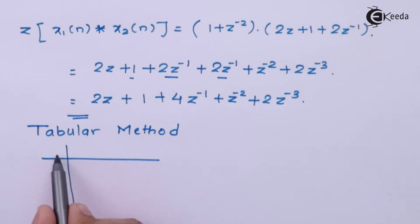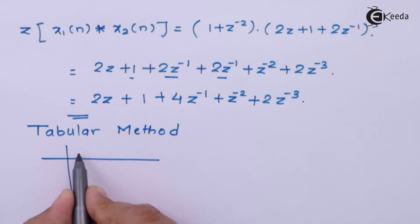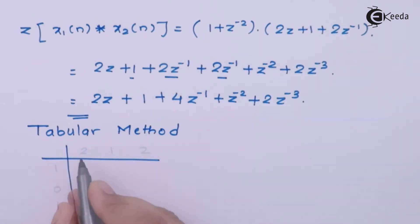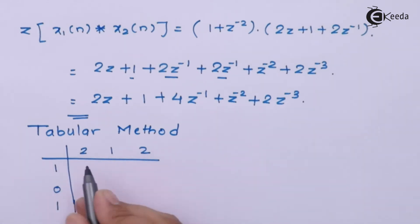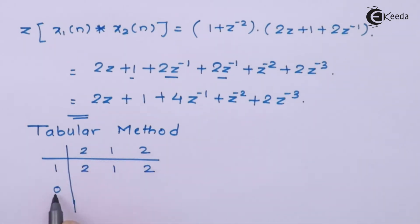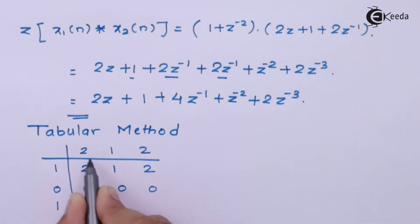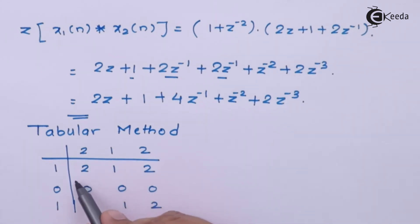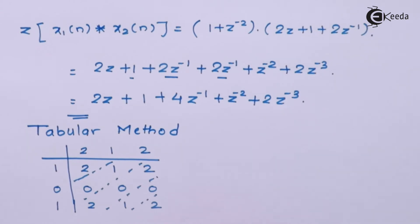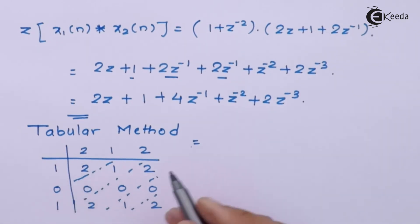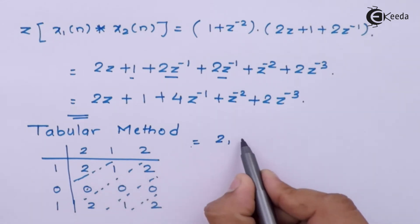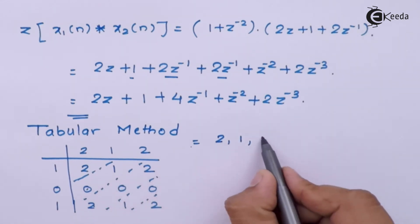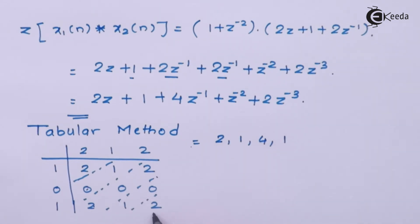For the tabular method, write X1 of N values in one row and X2 of N values in another. Multiply each element of X1 with all elements of X2 and write the results in the table. Then mark the diagonal rows and add the elements present in each diagonal row. Diagonal sums give: 2, then 0 plus 1 equals 1, then 2 plus 2 equals 4, then 1 plus 0 equals 1, and finally 2.